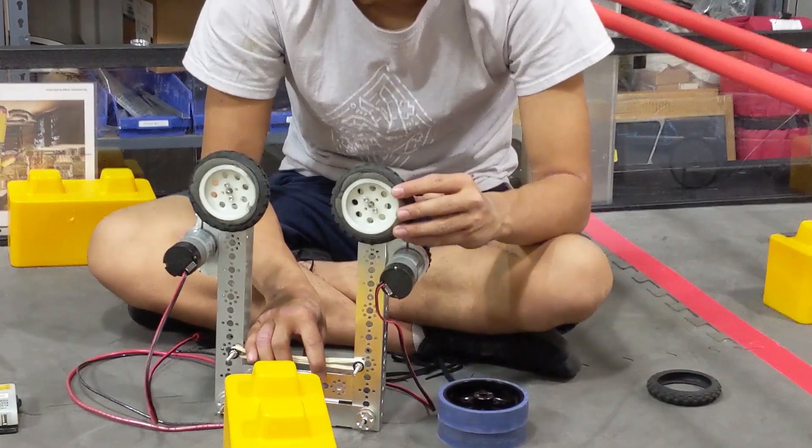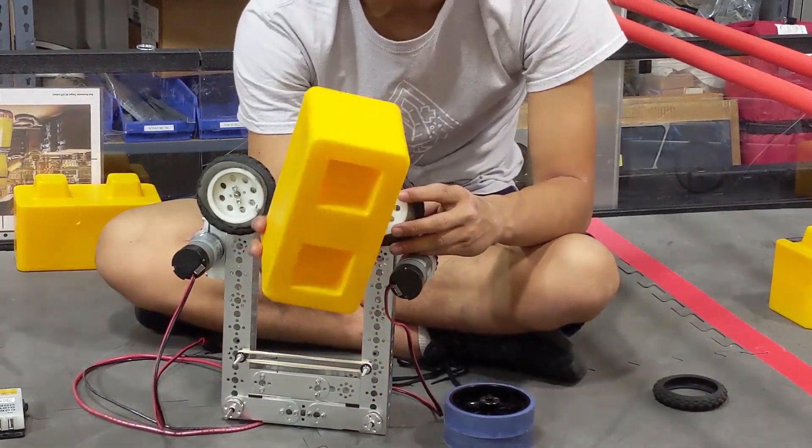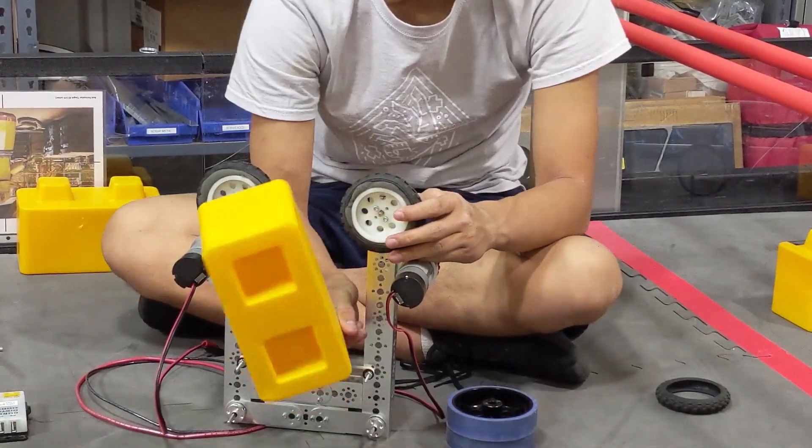So then we switched to custom-made compliance wheels, which are able to grip the block from a different angle and still be able to pull it in.